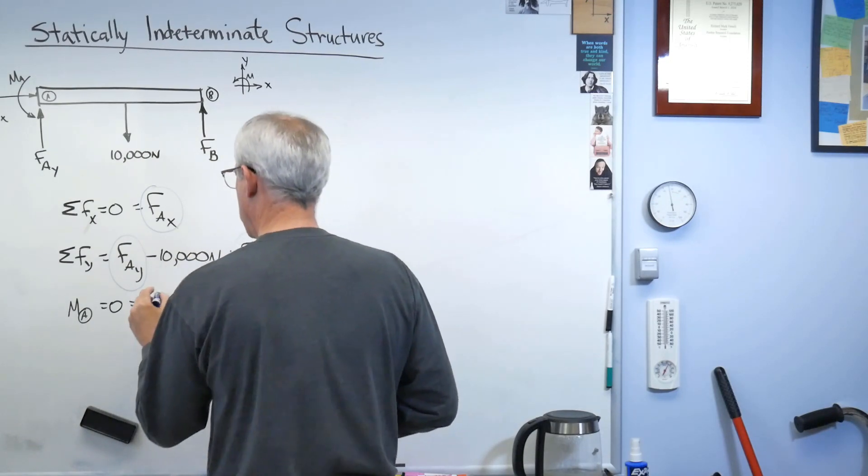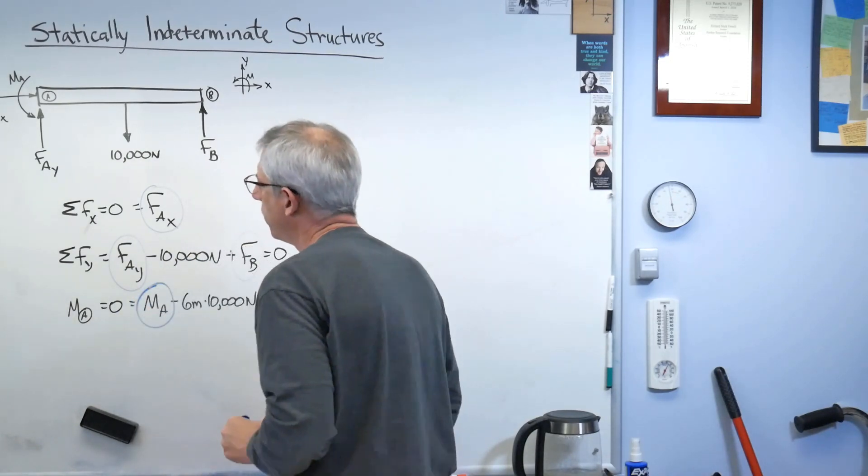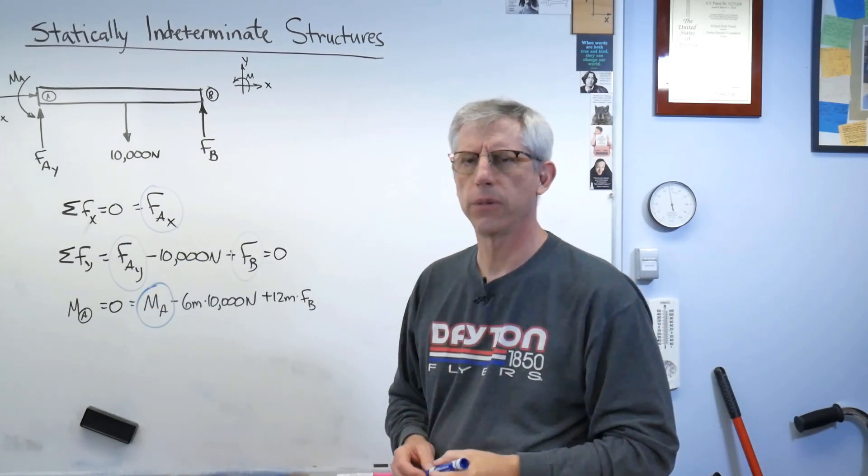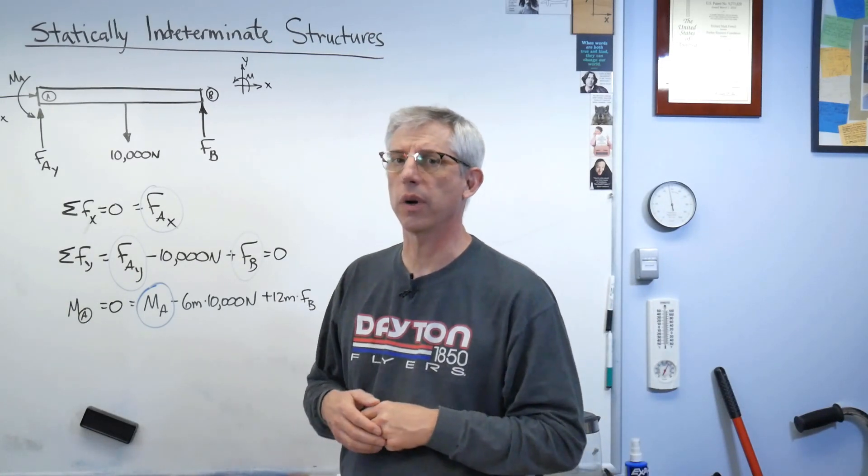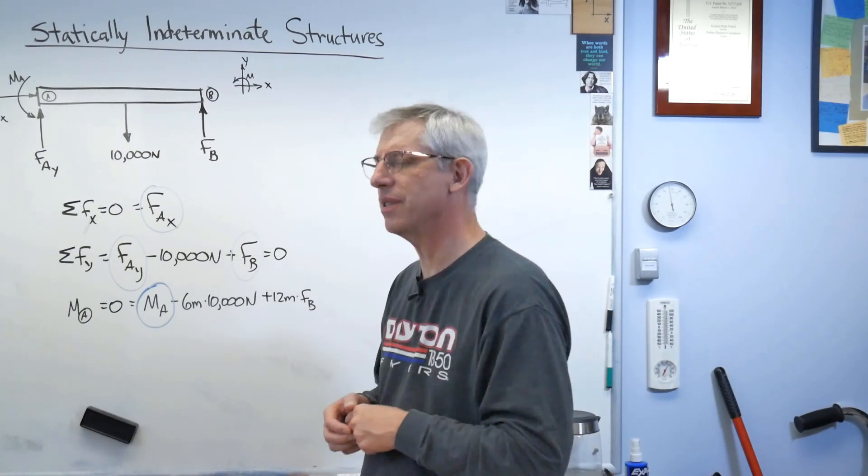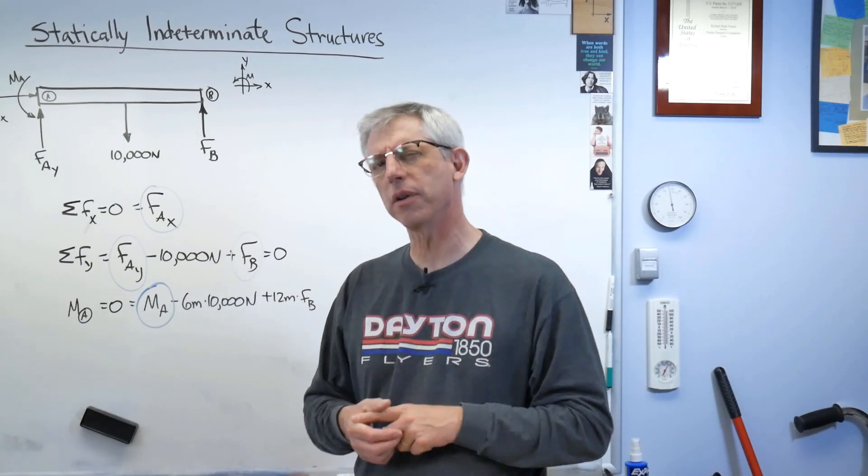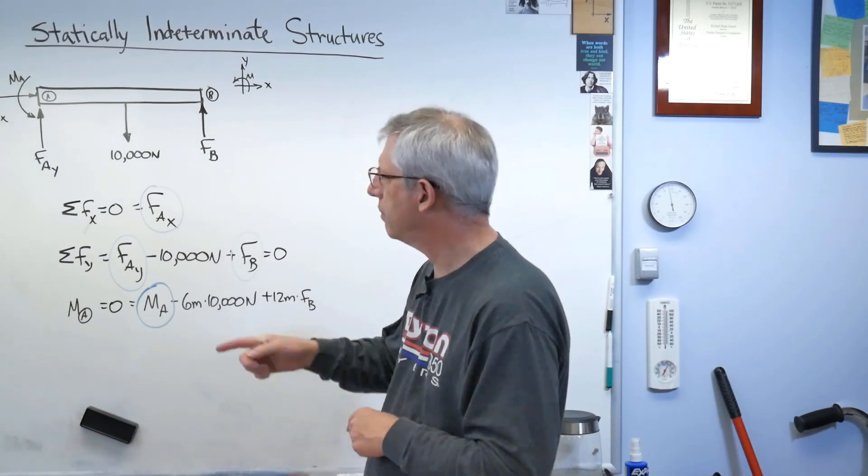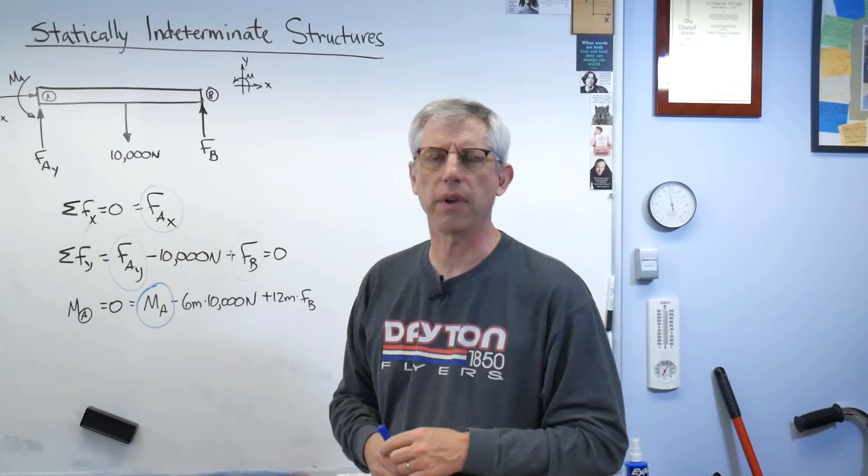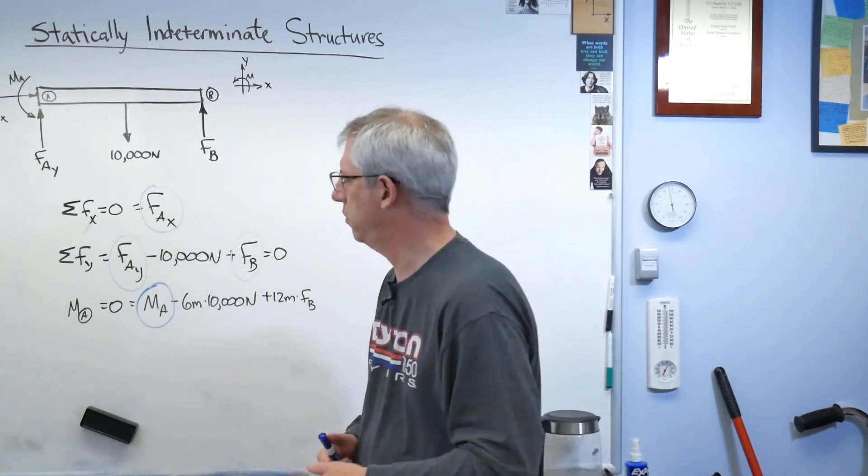there's three, and there's four. Four unknowns, three equations. It's not going to work, is it? You need as many equations as unknowns. That might be the fundamental theorem of algebra, I think. Well, we already solved for that one. We already know FAX equals zero, so let's just get rid of that one.